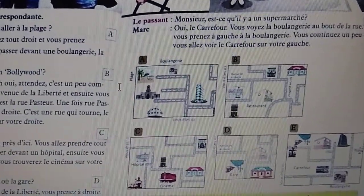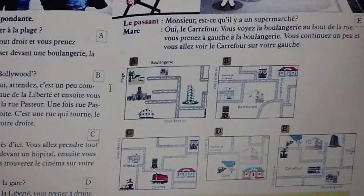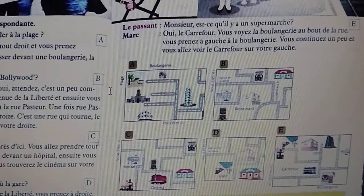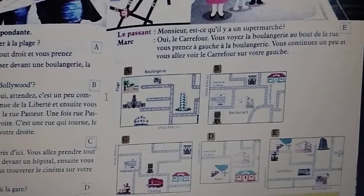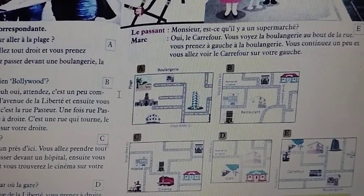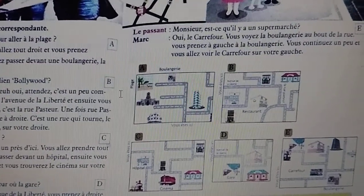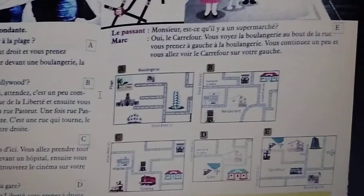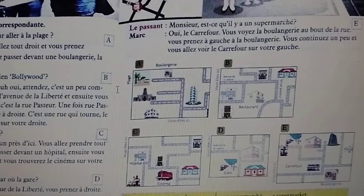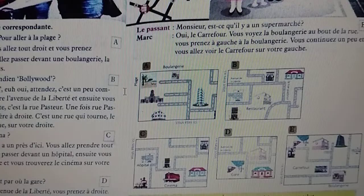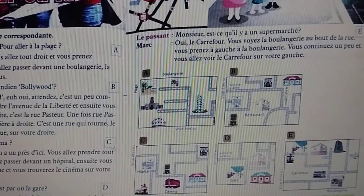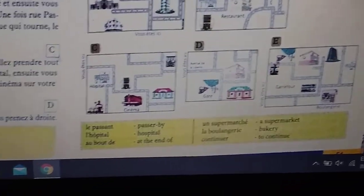La passant: monsieur, est-ce qu'il y a un supermarché? Marc: oui, le Carrefour. Vous voyez la boulangerie au bout de la rue? Vous prenez à gauche à la boulangerie. Vous continuez et vous allez voir le Carrefour sur votre gauche. Marc is helping — the passer-by is looking for a supermarket. Carrefour is like a big bazaar in France. He says you will see a bakery at the end of the street, take a left at the bakery, continue, and you will see the Carrefour supermarket on your left. I can show you the image.